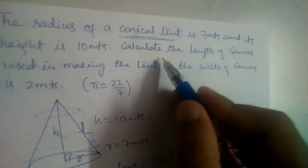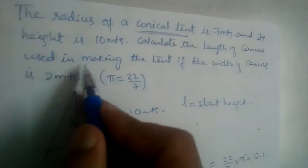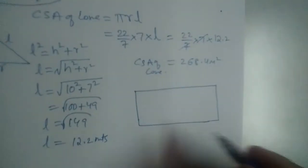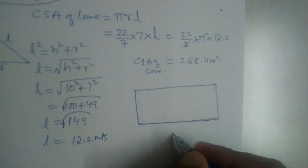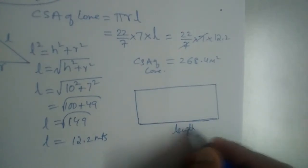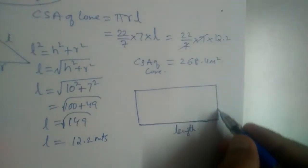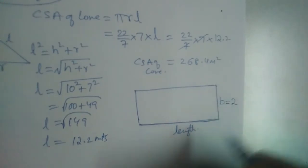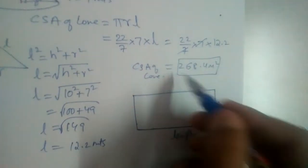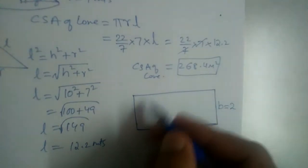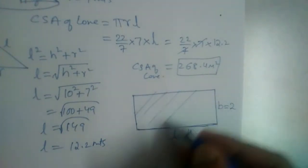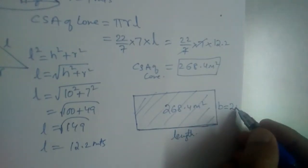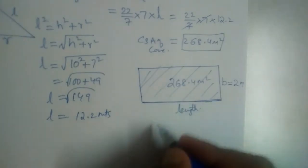Remember, this cone is made out of a cloth — the canvas. We need to find the length of canvas used in making the tent, given that the width of the canvas is 2 meters. The total area of the canvas equals the curved surface area, which we found to be 268.4 meters squared.